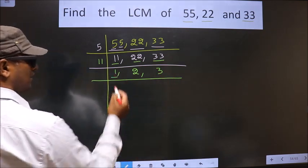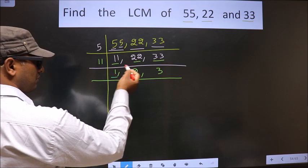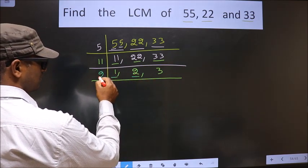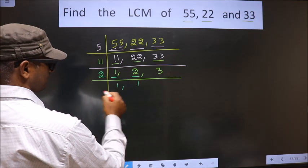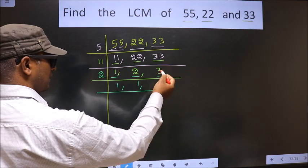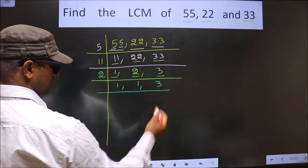Now here we got 1. So now we focus on the other number, that is 2. 2 is a prime number, so we take 2 once 2. The other number is 3. 3 is not divisible by 2, so you write down as it is.